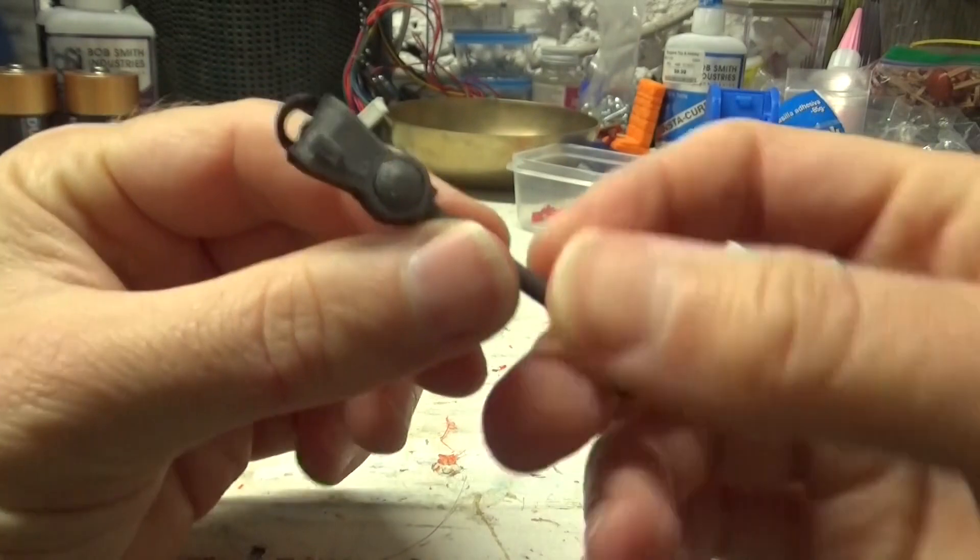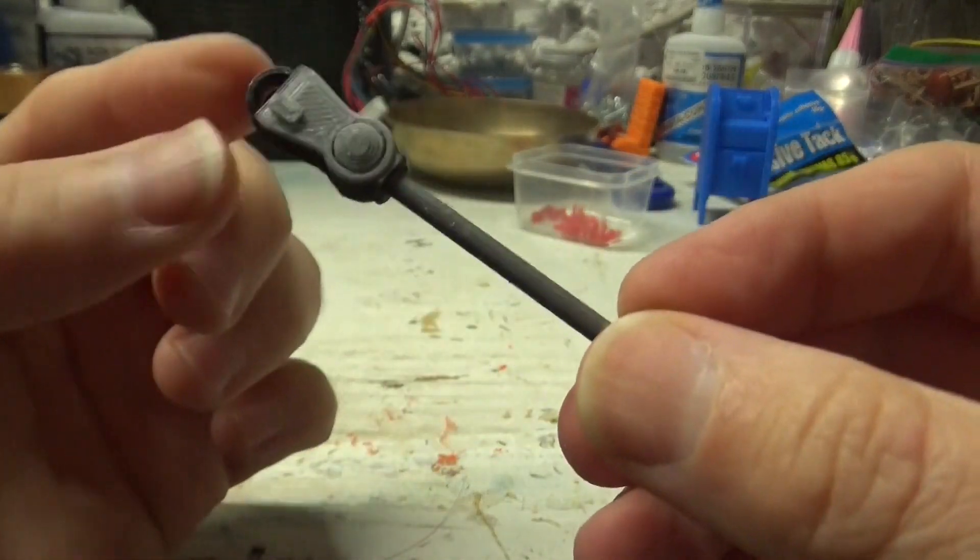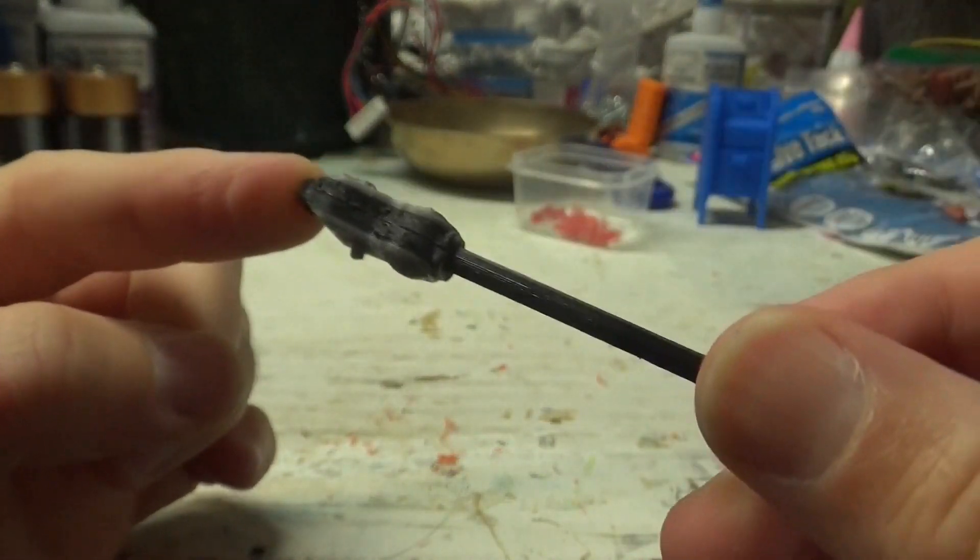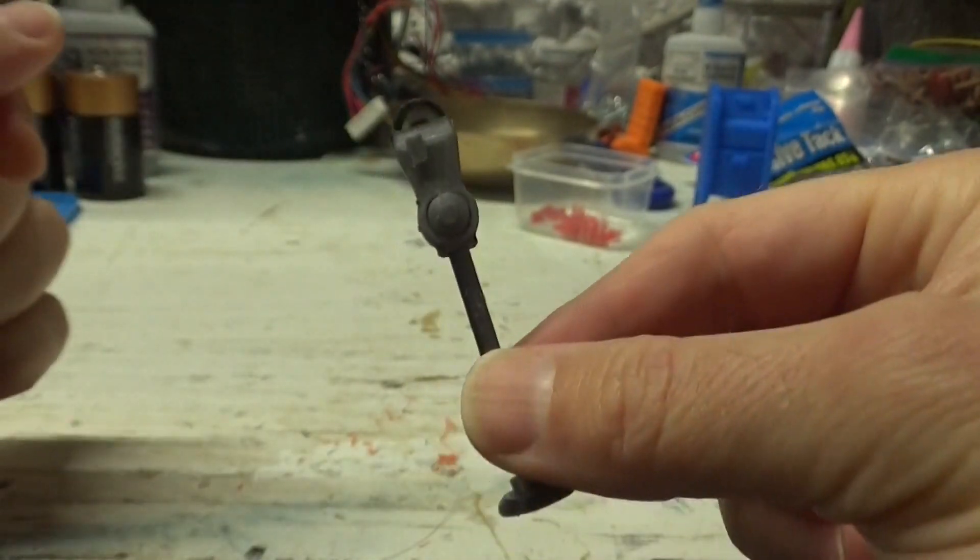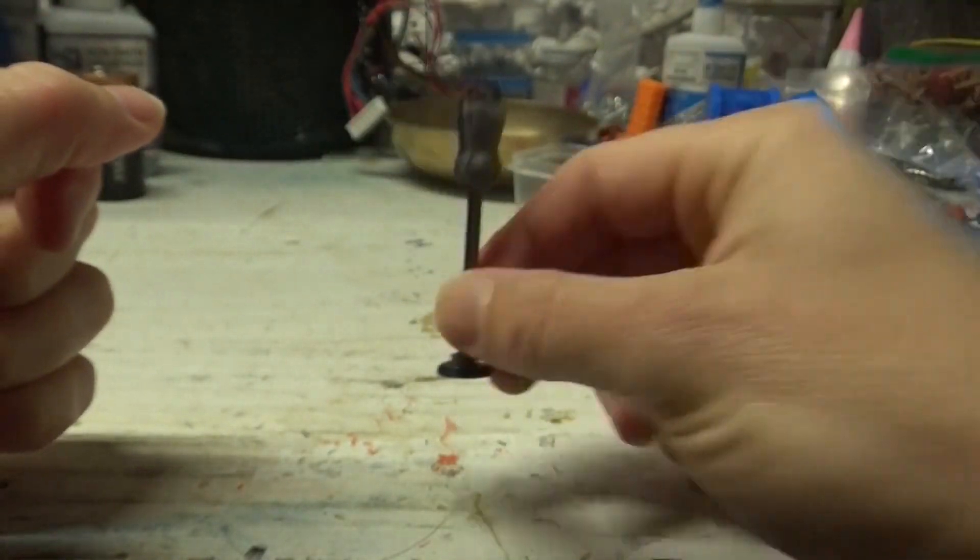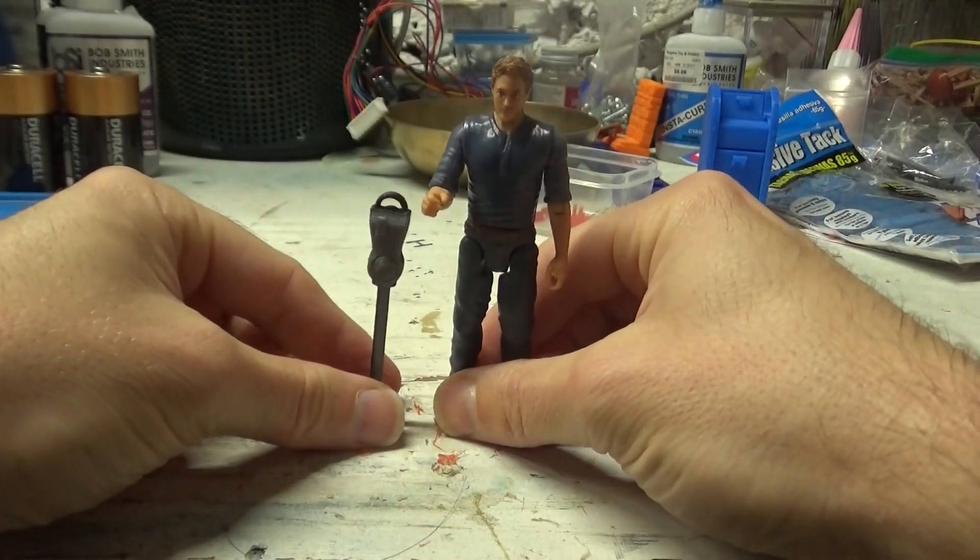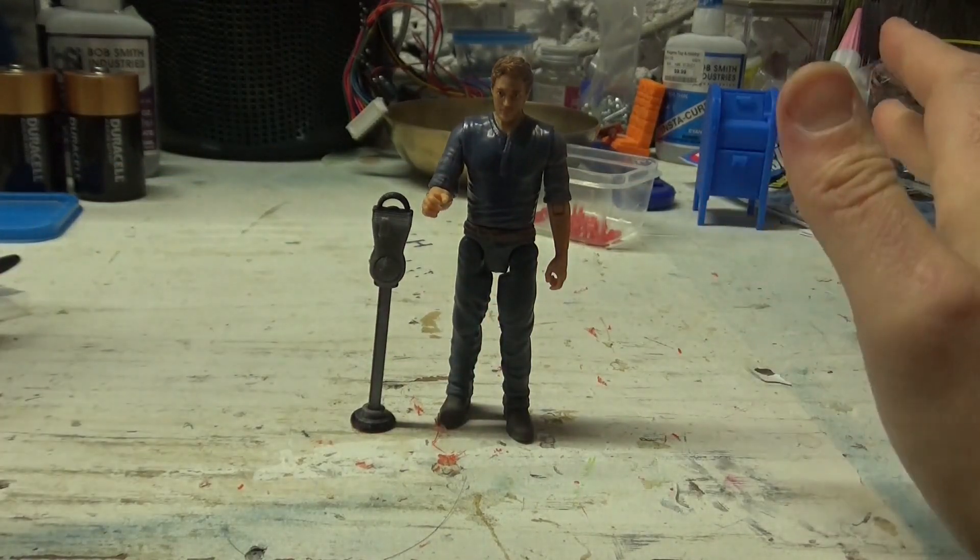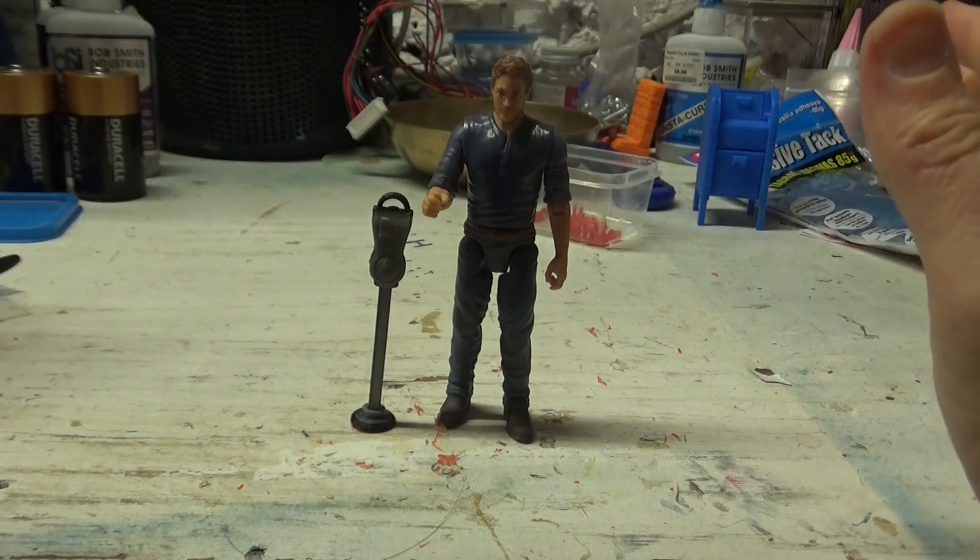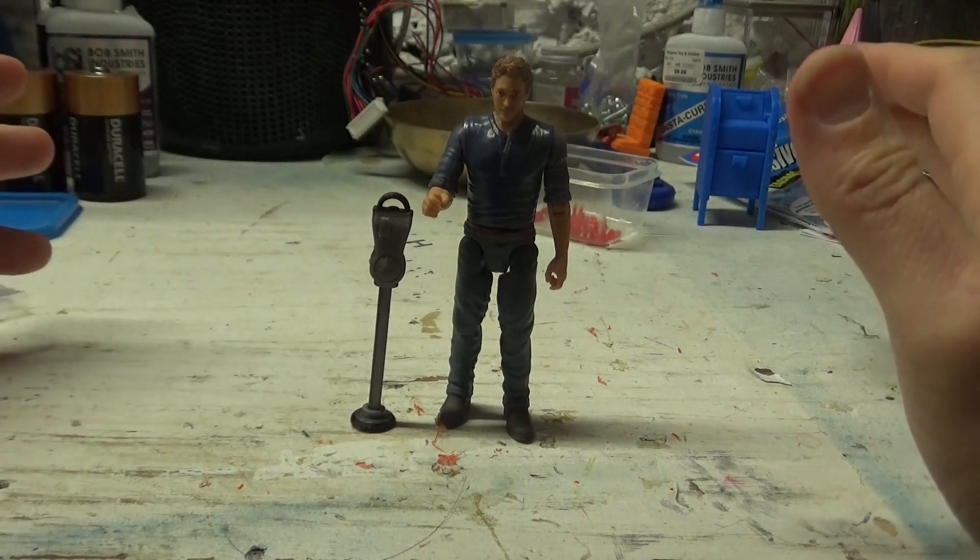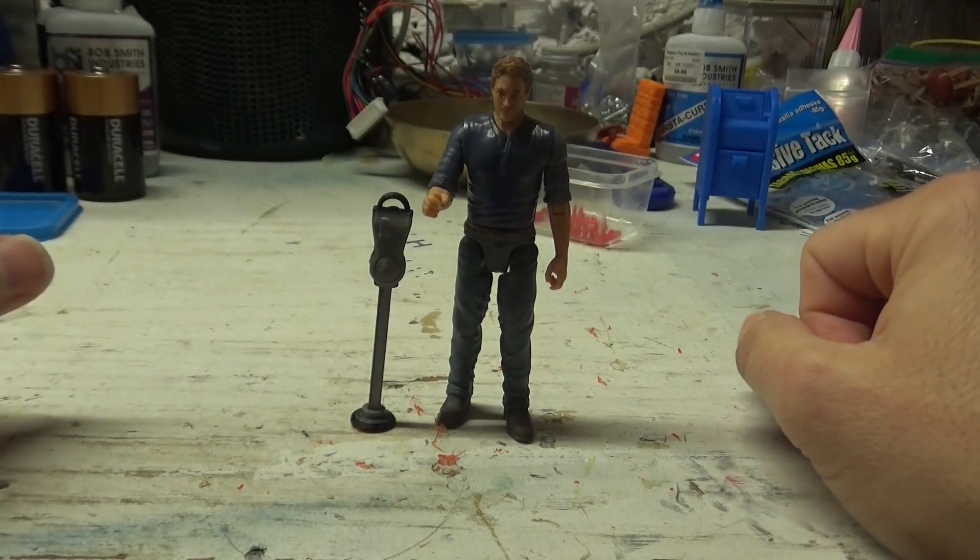So, then I printed the first prototype, which was this guy. And I still had some black filament in my machine, so it came out kind of two-toned. But overall, I was really pretty happy with this. Except, if I put it next to a figure, it looks a little bit short. And that's because the reference image I happened to use didn't have the full height of the parking meter.